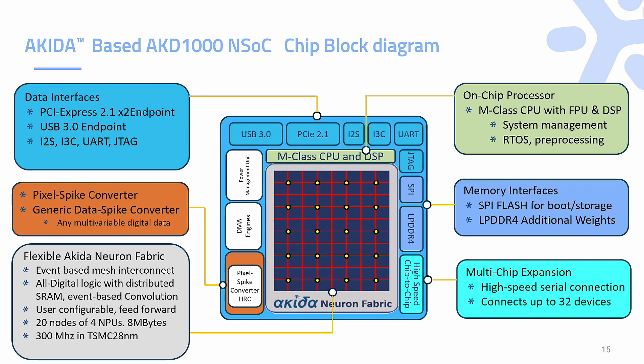The ARM M4 processor is used only for configuring the neural network and managing all the interfaces. You could run three or four different independent networks on the neural network fabric — like audio processing, sensor experimental data — and then do sensor fusion on the ARM M4. We are compatible with the standard ARM ecosystem, just as we adopted Google TensorFlow Keras. The ARM is for management and running the runtime; we don't use it for running the network itself.